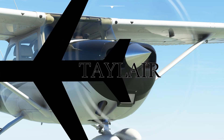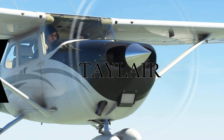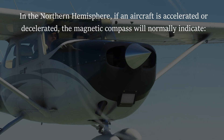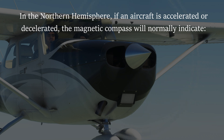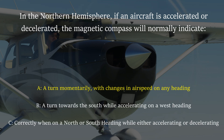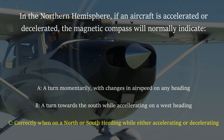Welcome back. It's time for another Theory Quickie. Here's a question from the FAA Database. In the Northern Hemisphere, if an aircraft is accelerated or decelerated, the magnetic compass will normally indicate: a) a turn momentarily with changes in airspeed on any heading, b) a turn towards the south while accelerating on a west heading, or c) correctly when on a north or south heading while either accelerating or decelerating.